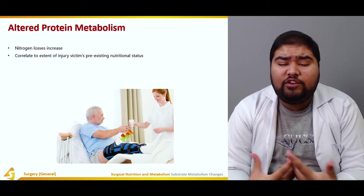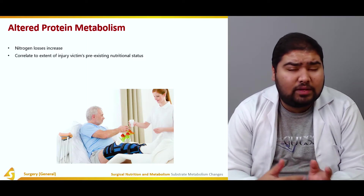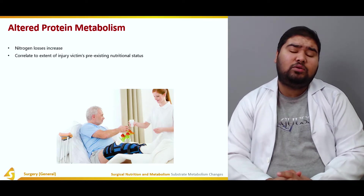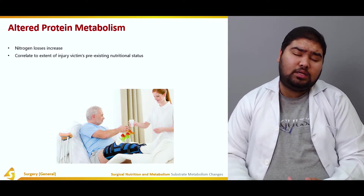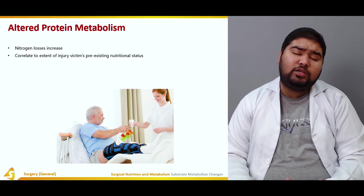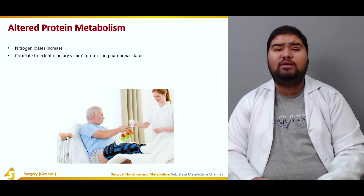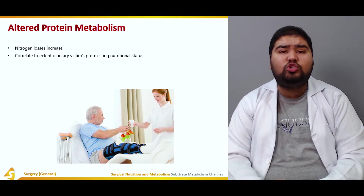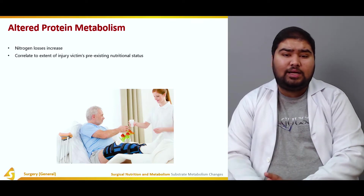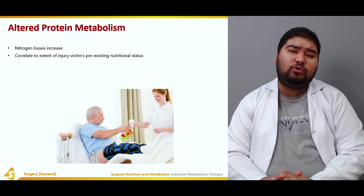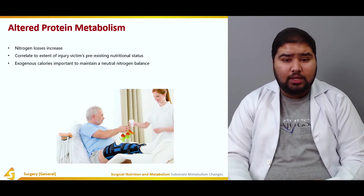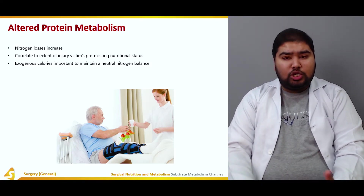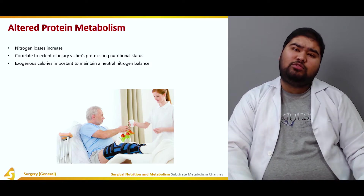For example, if an obese patient undergoes a stressor, that patient has more lipids to be metabolized, so the muscular component would not be as affected. However, if a cachectic patient undergoes this condition of altered protein metabolism, more protein would be lost. Exogenous calories are important to maintain a neutral nitrogen balance, since there is negative nitrogen balance.